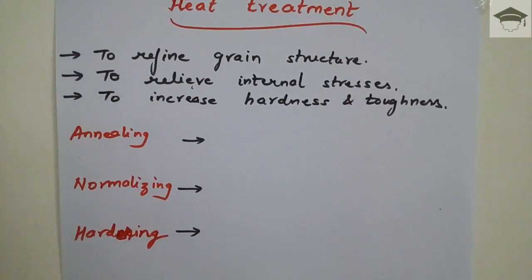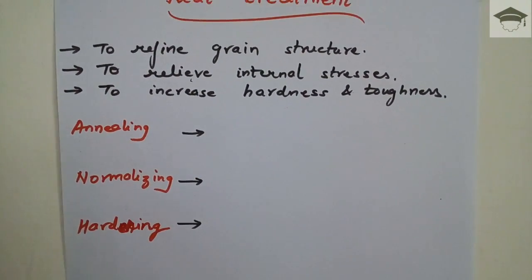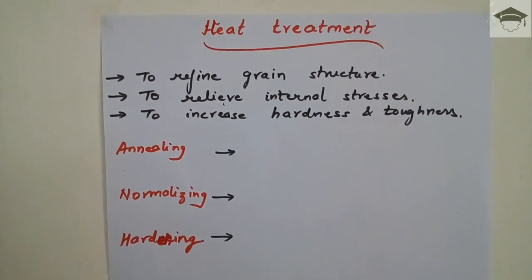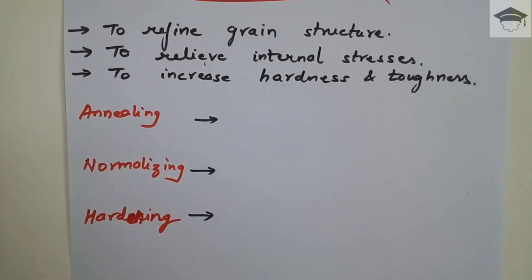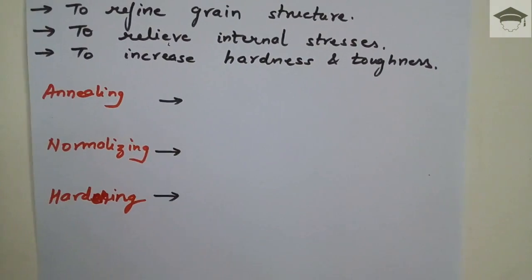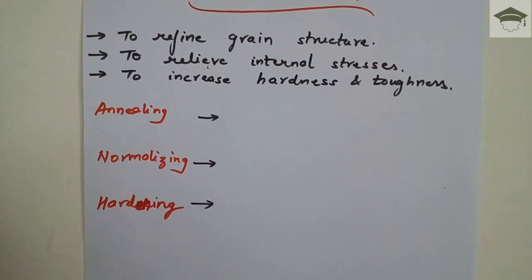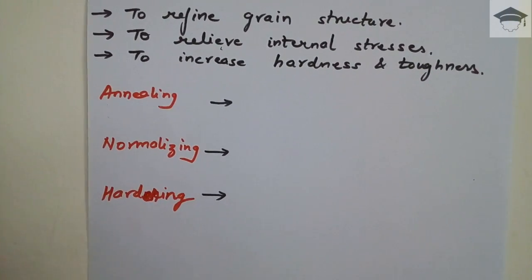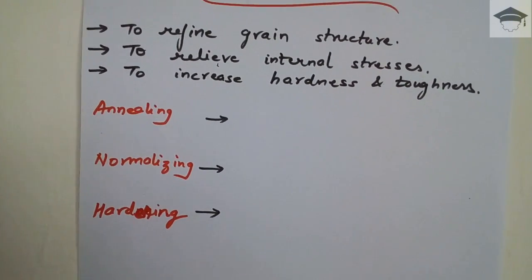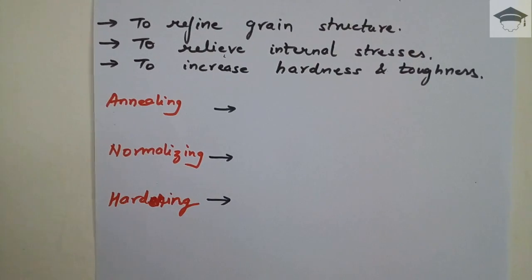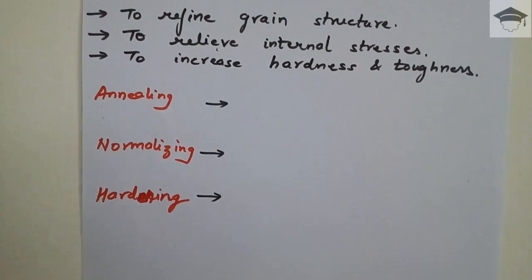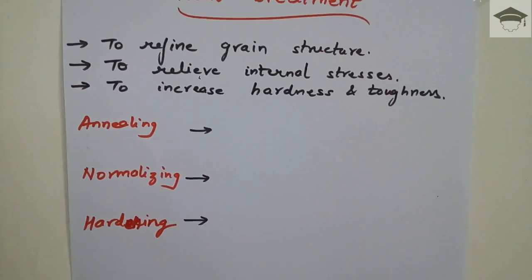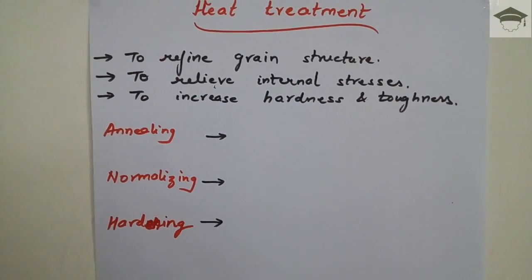The hardening process is applied to increase the hardness of the component's material. Hardening can be done by quenching, which is a sub-part of the hardening process. Many people think annealing, normalizing, and quenching are three separate processes — but the correct three processes are annealing, normalizing, and hardening, with quenching being a sub-process of hardening.